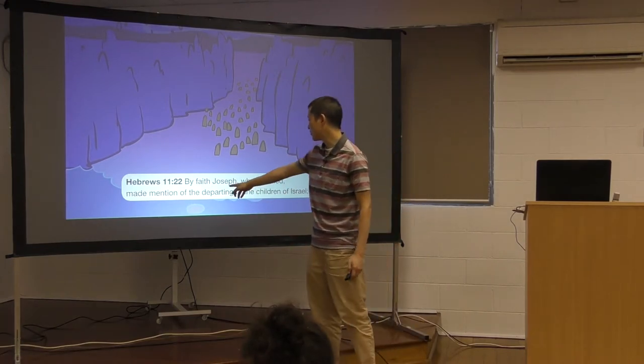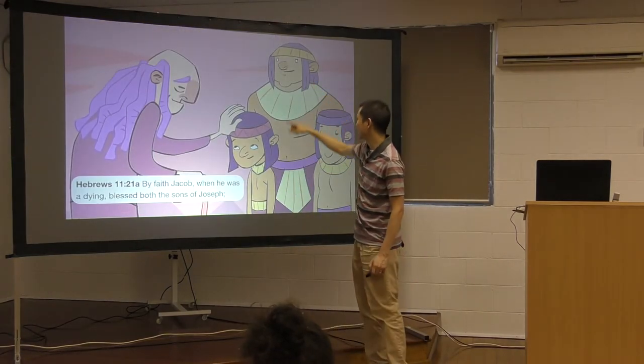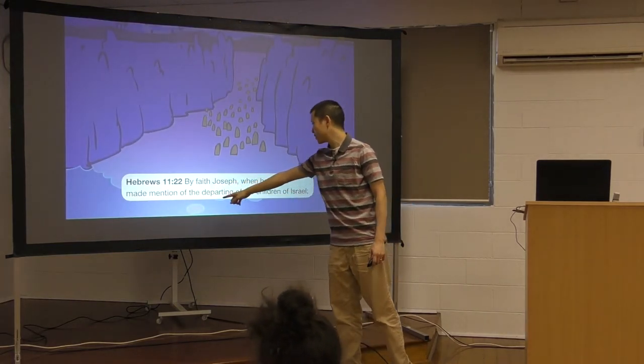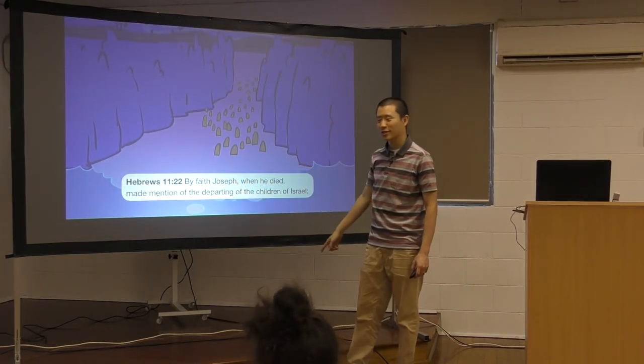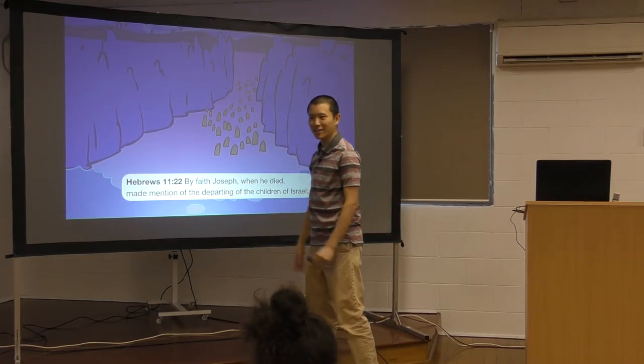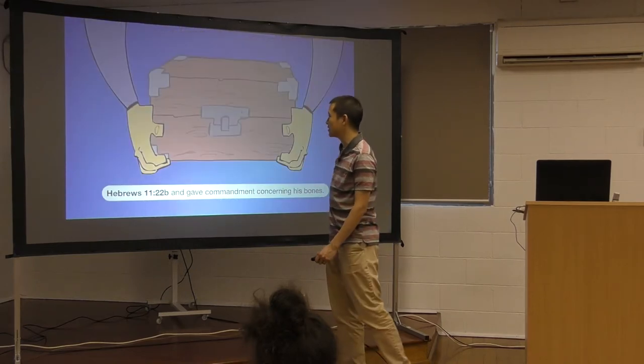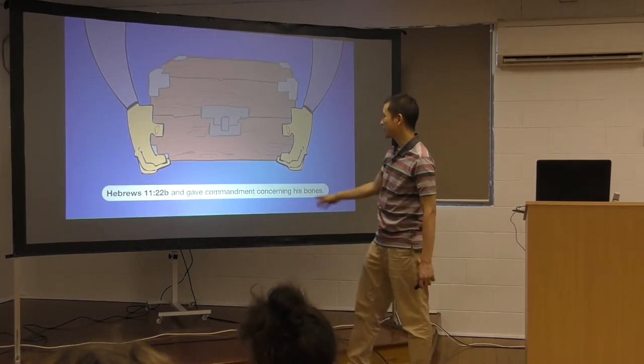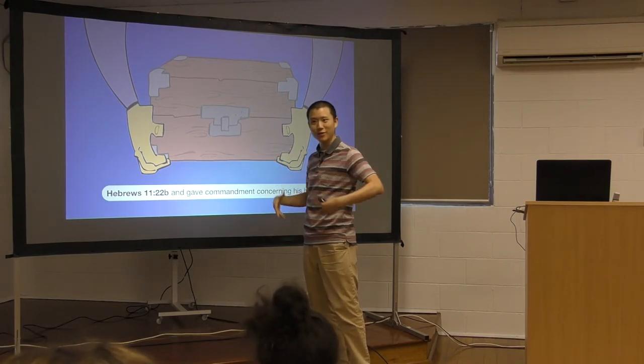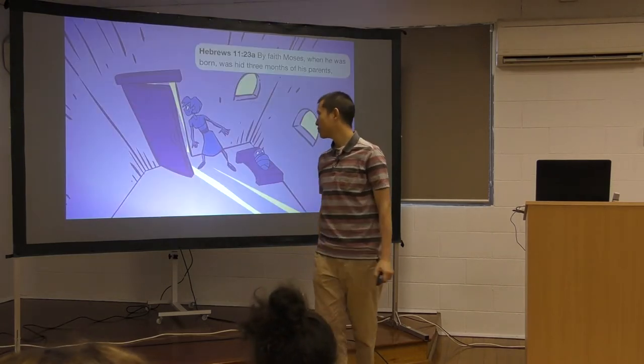By faith, Joseph, so this is Joseph here, these two children, when he died, made mention of the departing of the children of Israel. Did you know Joseph, when he died, he knew that one day the Israelites were going to leave in the Exodus. You remember when Moses parted the Red Sea? And gave commandment concerning his bones. So his bones were kept here. And he said, hey, when you leave, I want you to take my bones with you before he even died.